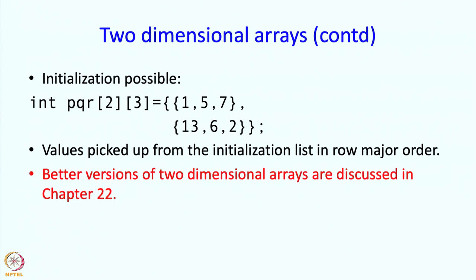Now two-dimensional arrays as described are not really all that useful, and we will see why in a minute. Later in the course we will talk about nicer two-dimensional arrays. But concepts like having two indices, or the fact that a two-dimensional array can be thought of as a one-dimensional array followed by another one-dimensional array, are actually important ideas from the language C.